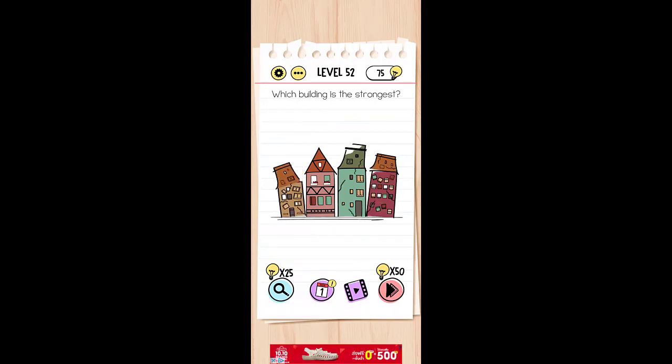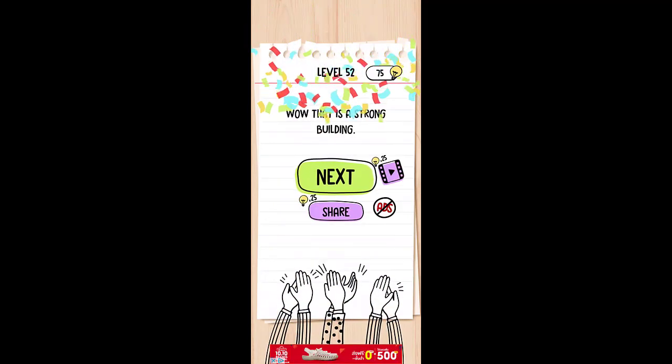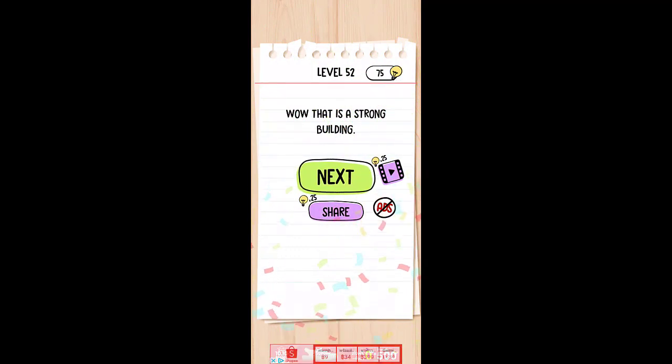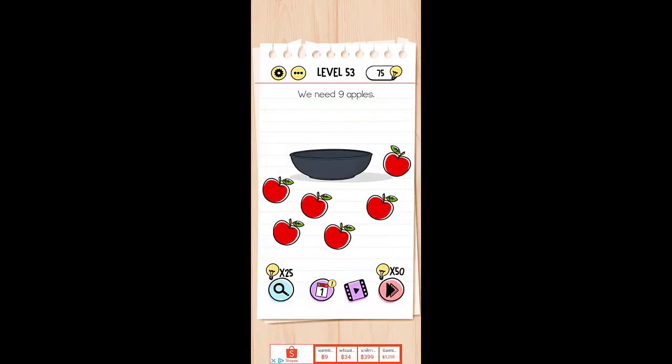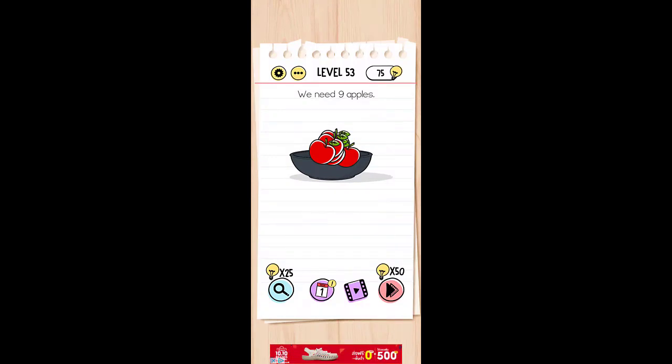The other buildings will crack and the strongest one remains. We need nine apples but here we have one, two, three, four, five, six. So from where we can get extra three apples? We don't need to.